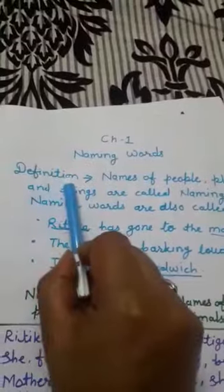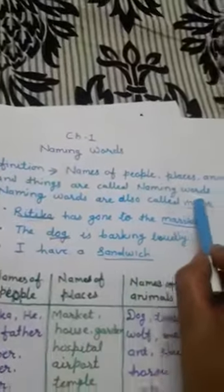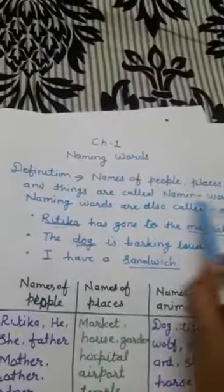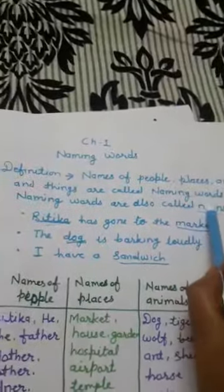The definition: Names of people, places, animals and things are called naming words. Naming words are also called noun.